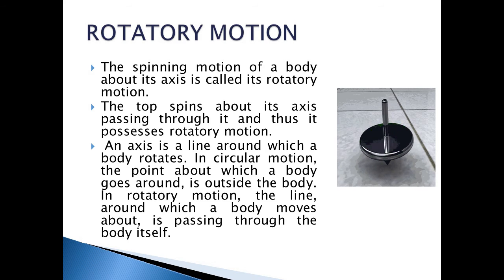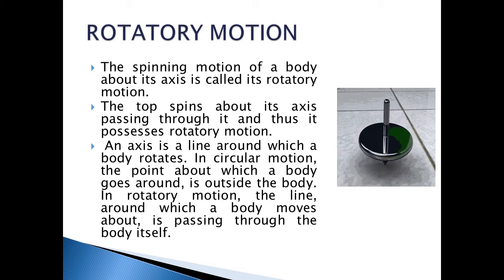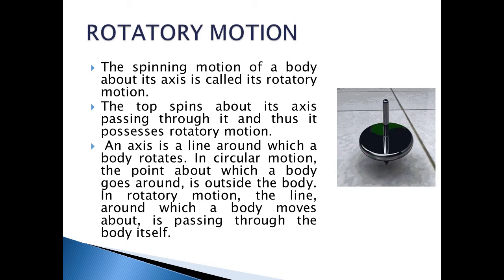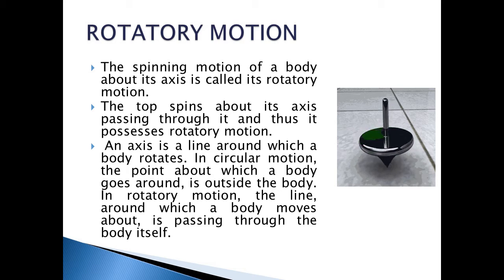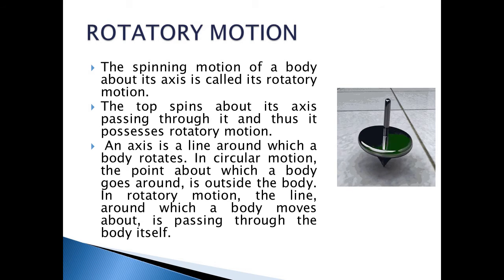The main difference between rotatory motion and circular motion is that in rotatory motion the body moves around an axis that is inside the body itself, while in circular motion the axis is outside the body which is moving. You can see a spinning top — it has an axis which is present inside the top.